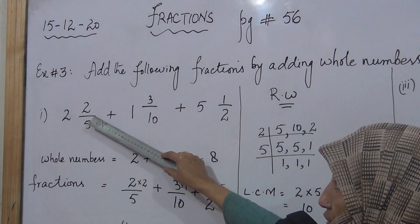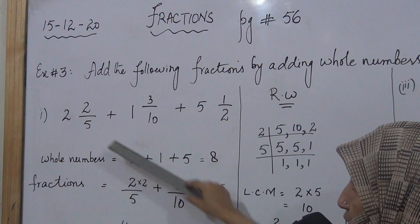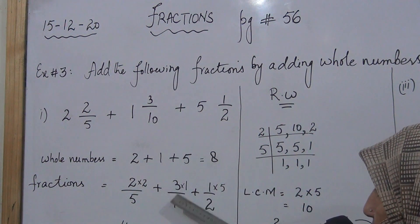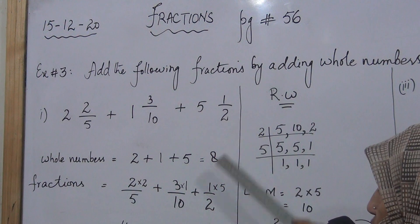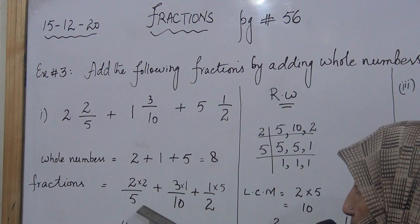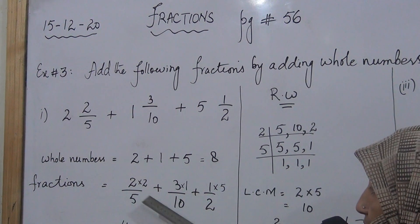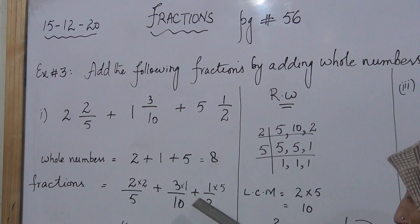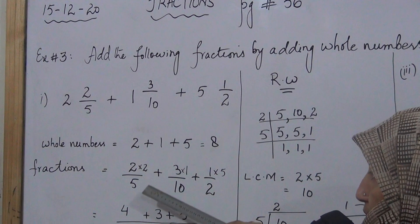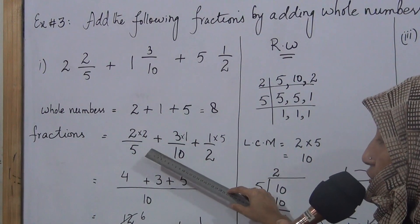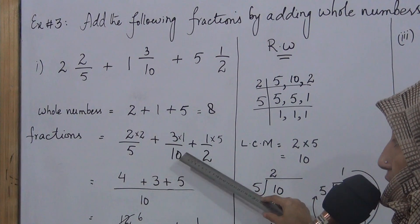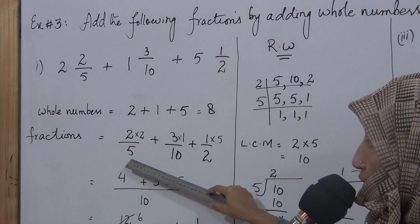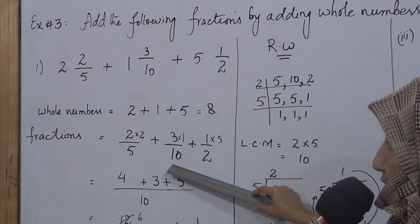Now the fractions are: 2 upon 5 in the first number, 3 upon 10 in the second number, and 1 upon 2 in the third number. We will add these fractions. For addition and subtraction of fractions, we need a common denominator, so we will find the LCM of the denominators.